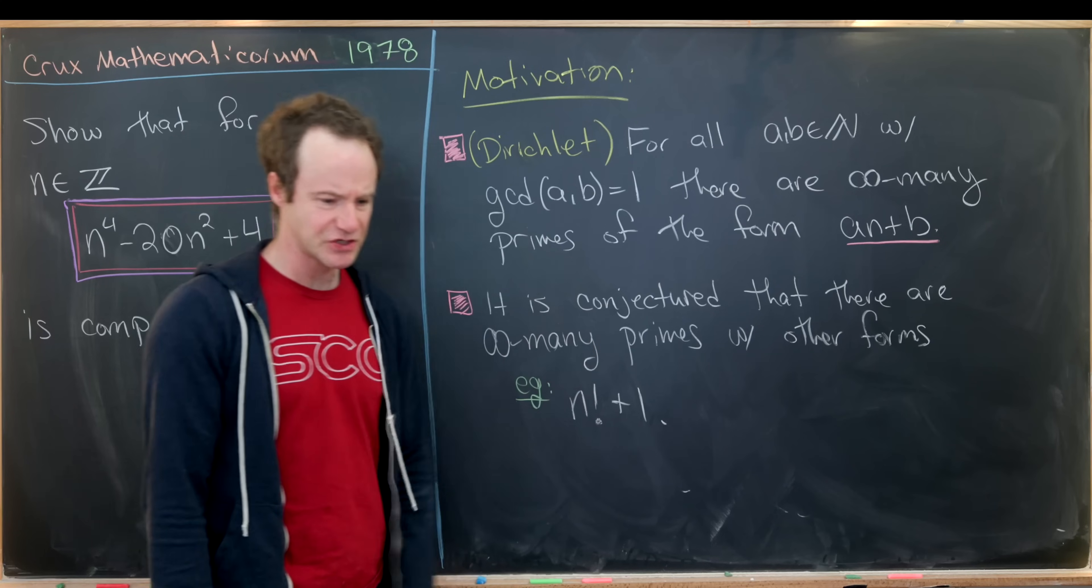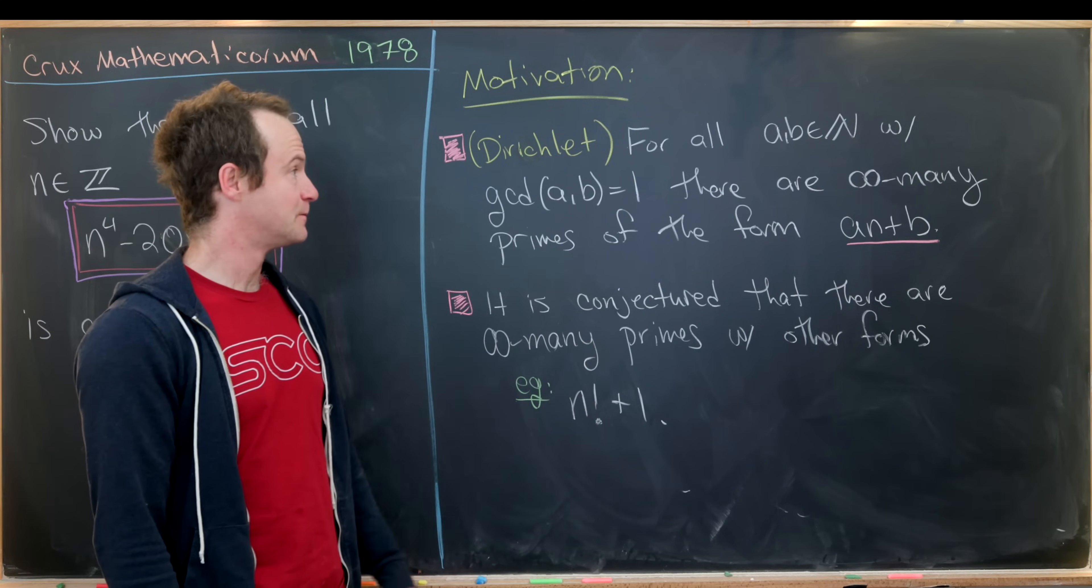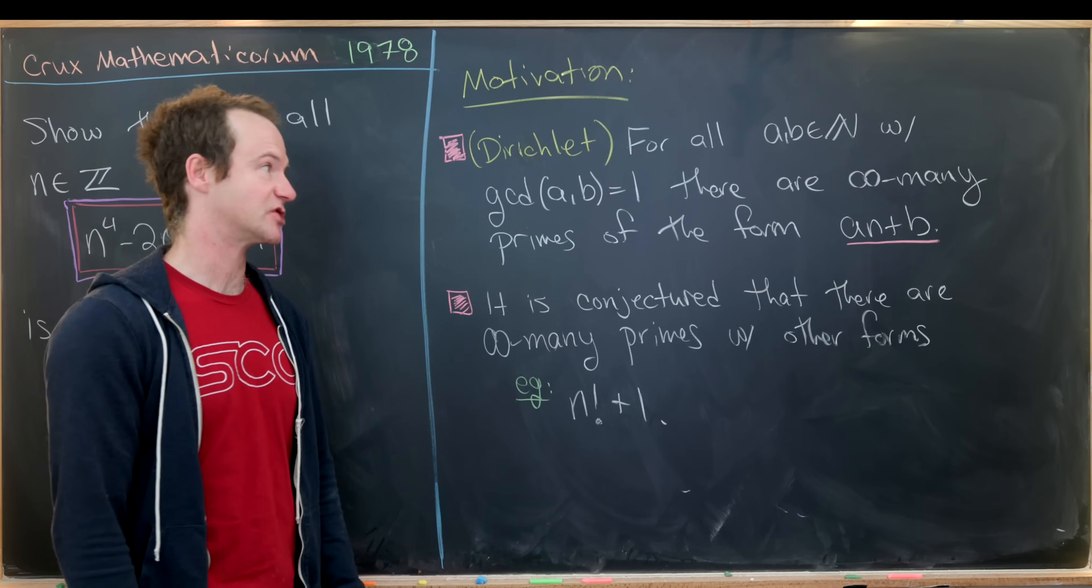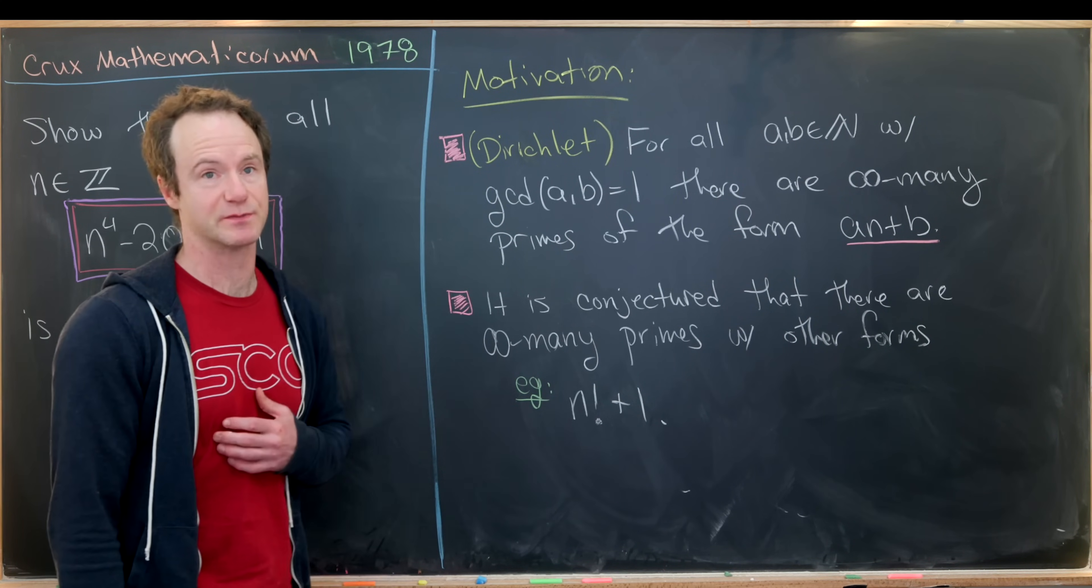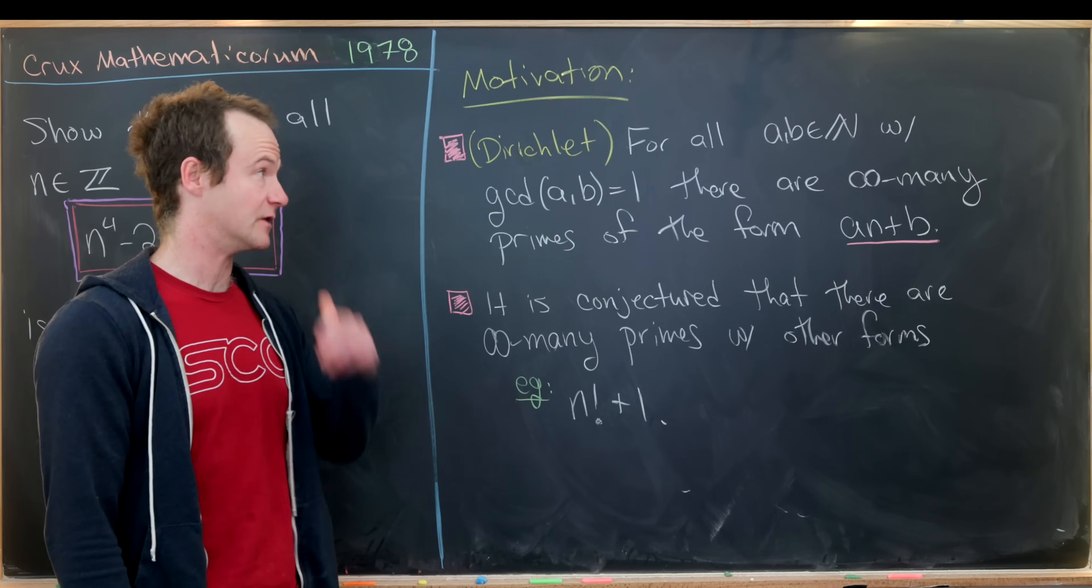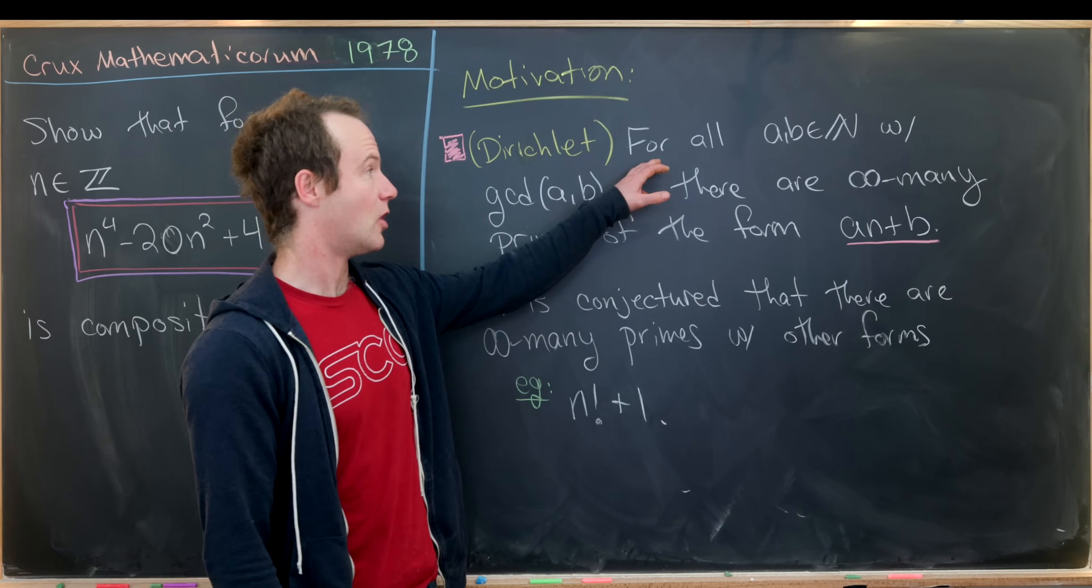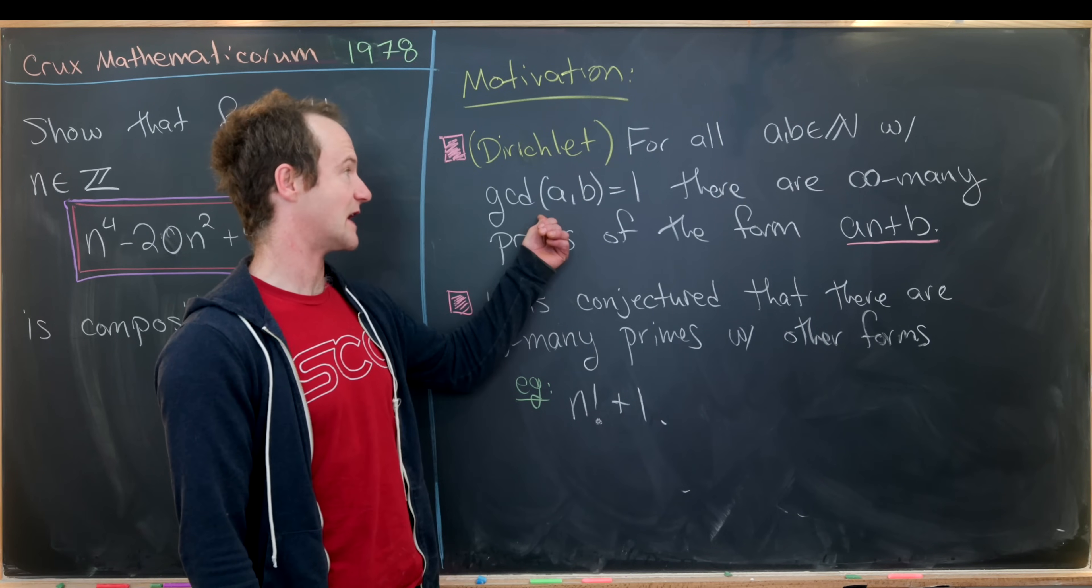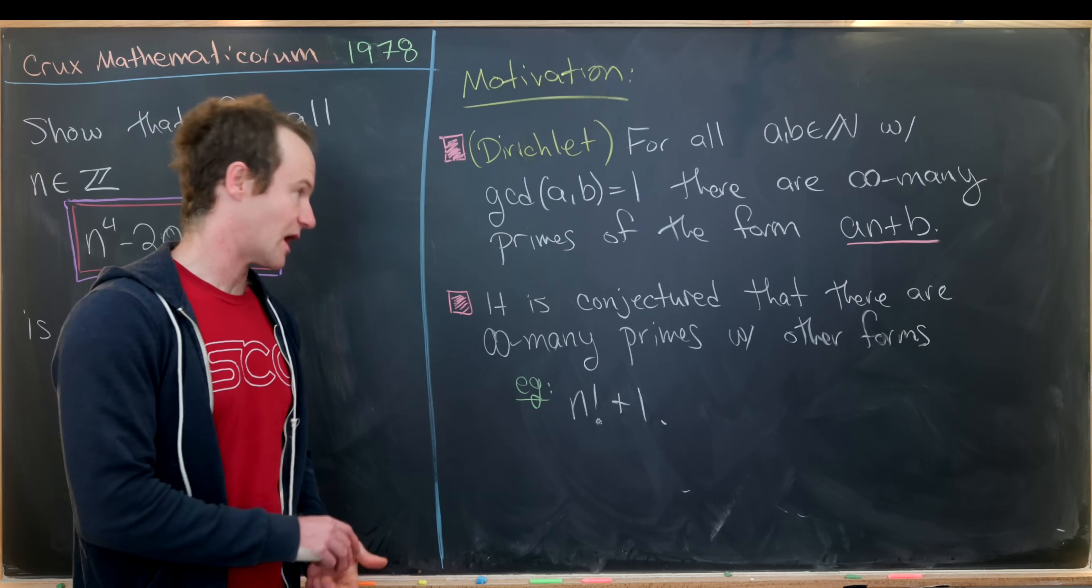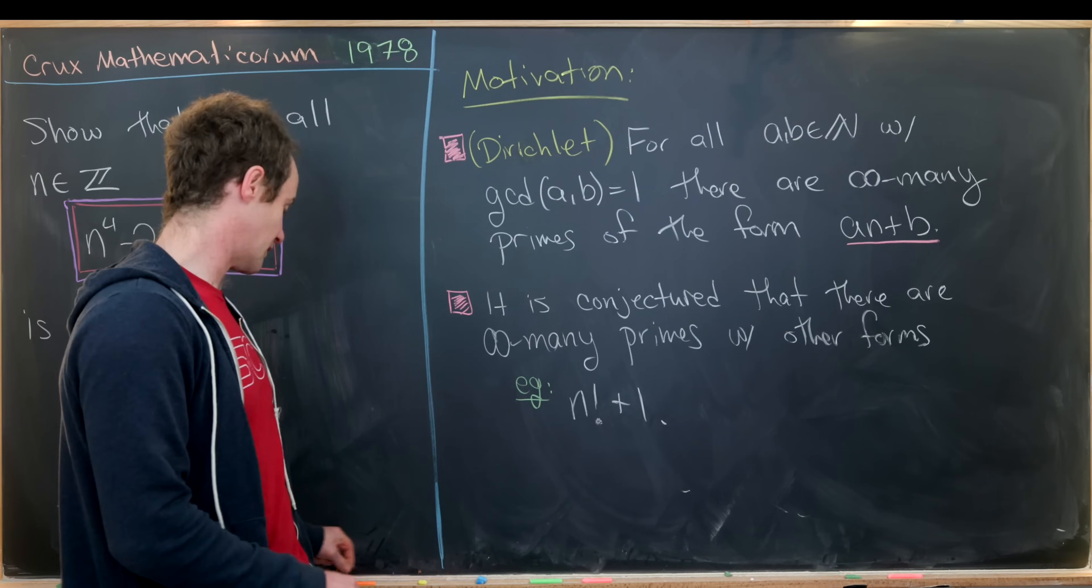Some motivation behind this problem: the first motivating piece is Dirichlet's theorem, which is pretty hard to prove, although I've proved several special cases on the channel. It says for all relatively prime natural numbers a and b, there are infinitely many primes of the form an plus b.